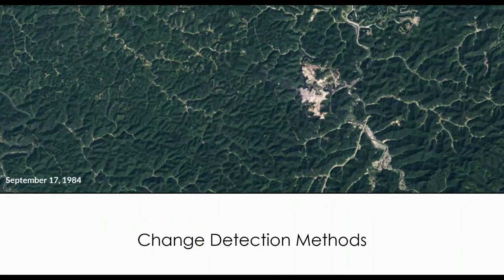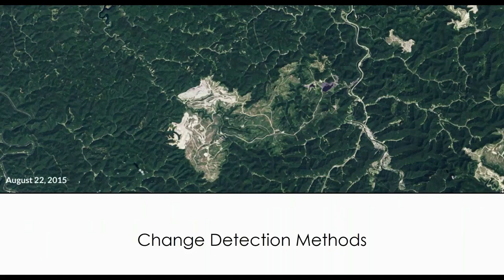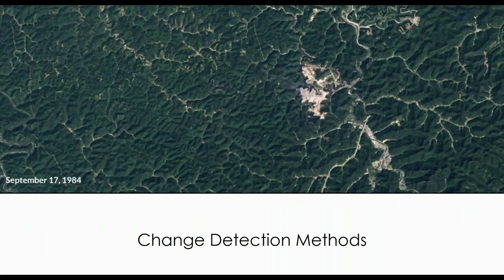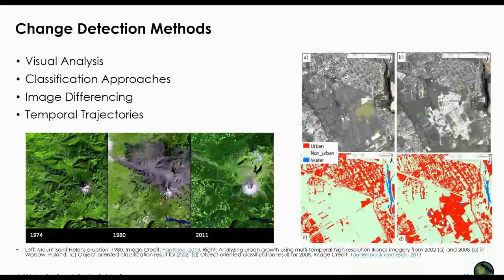Next I'll describe some change detection methods. There are many ways to detect change in imagery; I'll cover four: visual analysis, classification approaches, image differencing, and temporal trajectories.